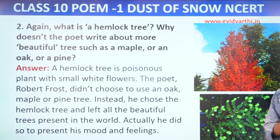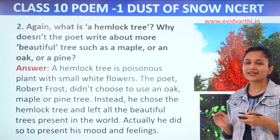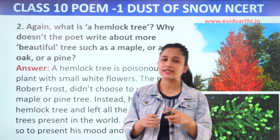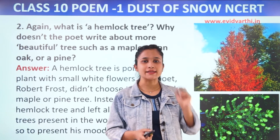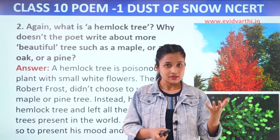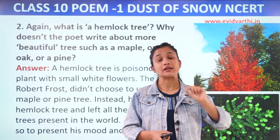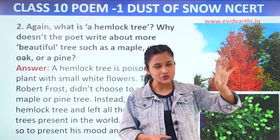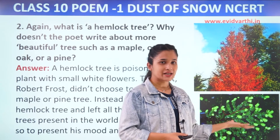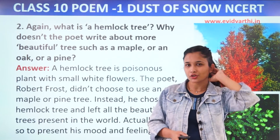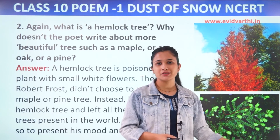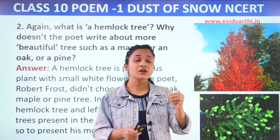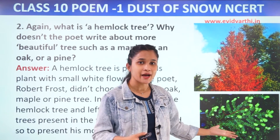Actually, he did so to present his mood and feeling. He wanted to use the hemlock tree because he didn't want to use beauty in this poem. When he was writing his poem and the whole incident happened, his mood was depressing and sad. If he used the hemlock tree, it could show his present mood. But if you look at the deeper meaning, you can see that this hemlock tree was inauspicious, yet still, due to being inauspicious, there were good changes in the poet's whole day because of the incident of the hemlock tree.